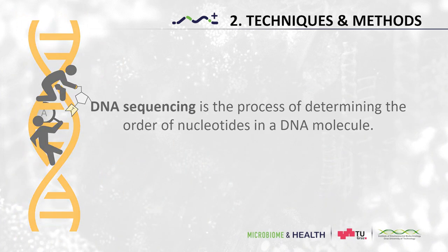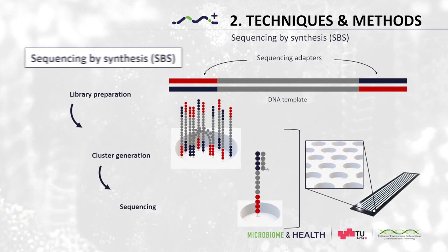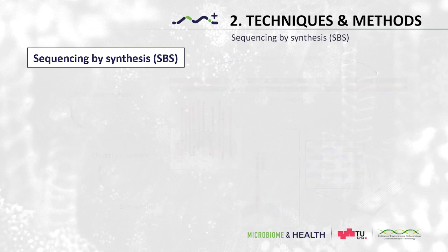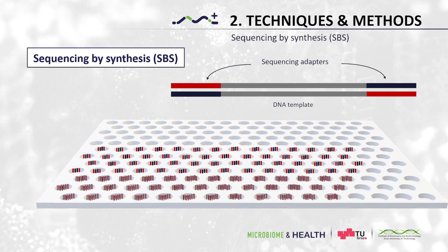There are different sequencing technologies. The most common platform in microbiome research is sequencing by synthesis. First, sequencing adapters are added to the DNA fragments. The modified DNA is then loaded onto a flow cell where amplification and sequencing will take place. The flow cell contains billions of nano-wells, each containing oligos complementary to the sequencing adapter, which is needed to tether the DNA to the flow cell.